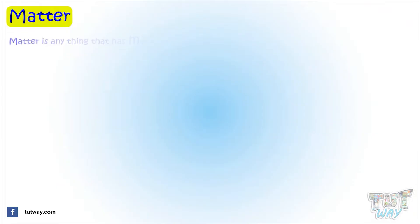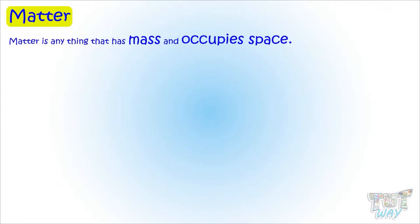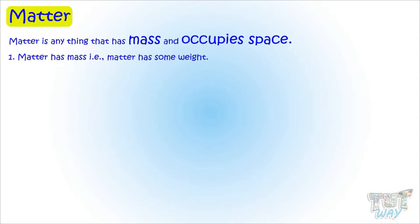The definition of matter is: matter is anything that has mass and occupies space. Now let's understand this definition. First point is, matter has mass — it means matter has some weight. Second point is, it occupies space — it means matter needs space.